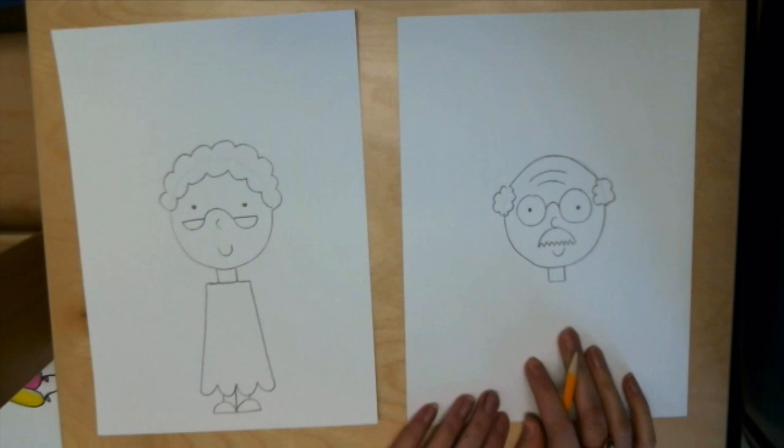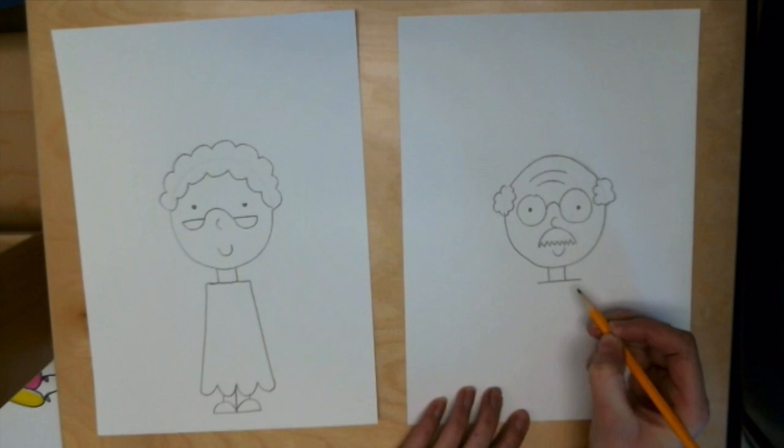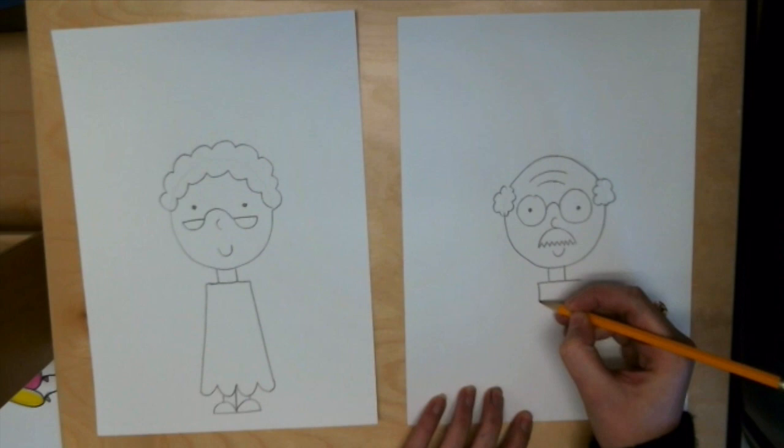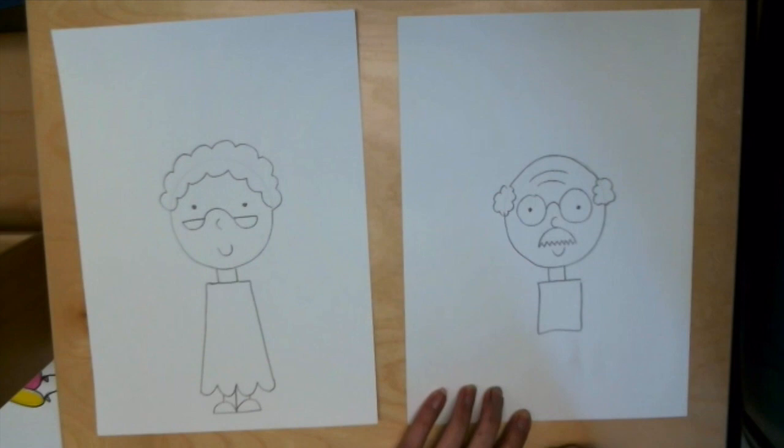All right let's give our hundred year old man an outfit. So I'm gonna start again with that shoulder line so that goes a little bit past each side of his shoulders and then I'm going to go down and this is just going to be his shirt so I'm gonna make kind of a square.